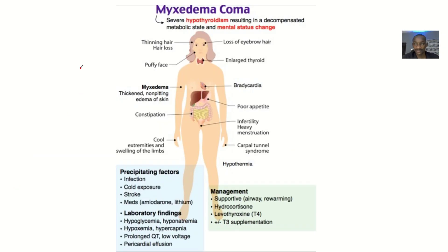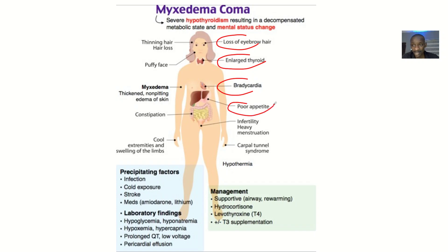Looking at this picture now, it has the detailed clinical presentation of myxedema coma. For the eyebrows, the patient may be losing their eyebrows. Any condition of the thyroid gland can present with an enlarged thyroid — that's a goiter. The heart will be beating slowly — bradycardia. There will be poor appetite, the patient won't want to eat. Infertility may occur, and women will have heavy menstruation. Carpal tunnel syndrome. Thinning of the hair or hair loss.